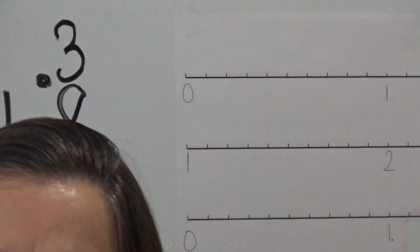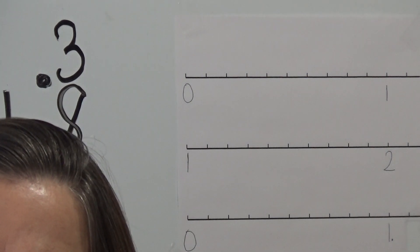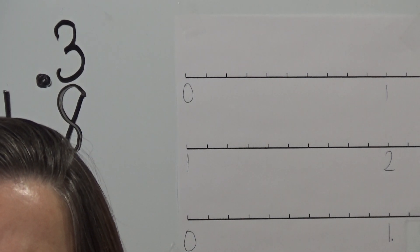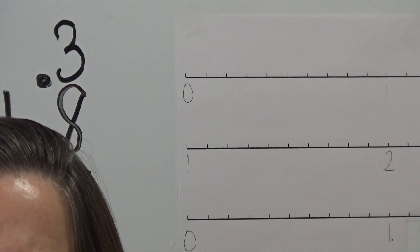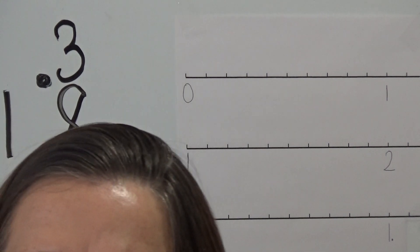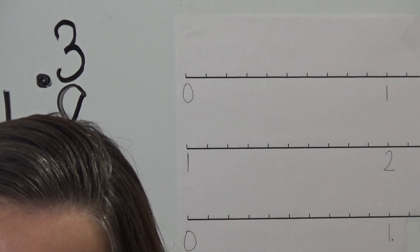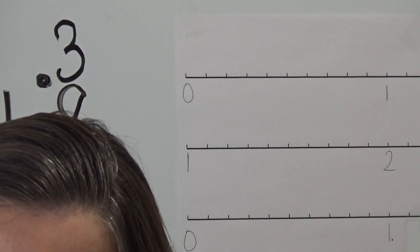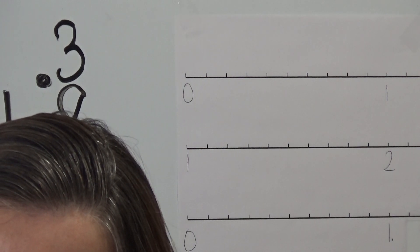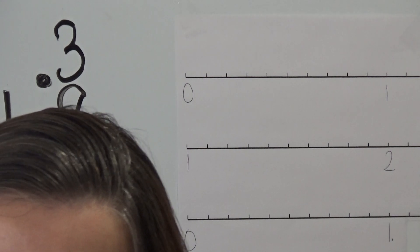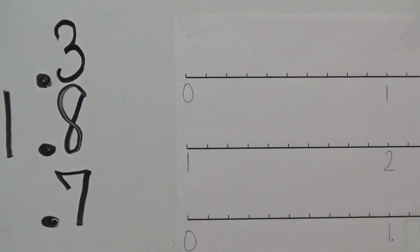Welcome to my channel, Mastery Math. My name is Julia Cox, and the purpose of this video is to help students with 4.2h — determine the corresponding decimal to the tenths or hundredths place of a specified point on a number line. We're going to go ahead and start off with the tenths.